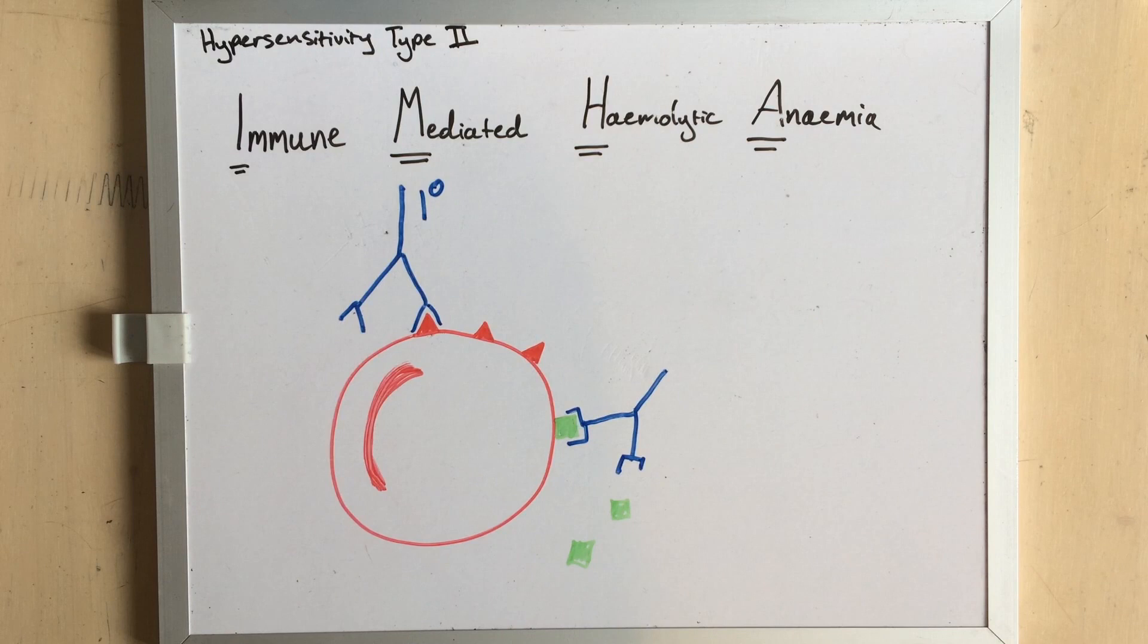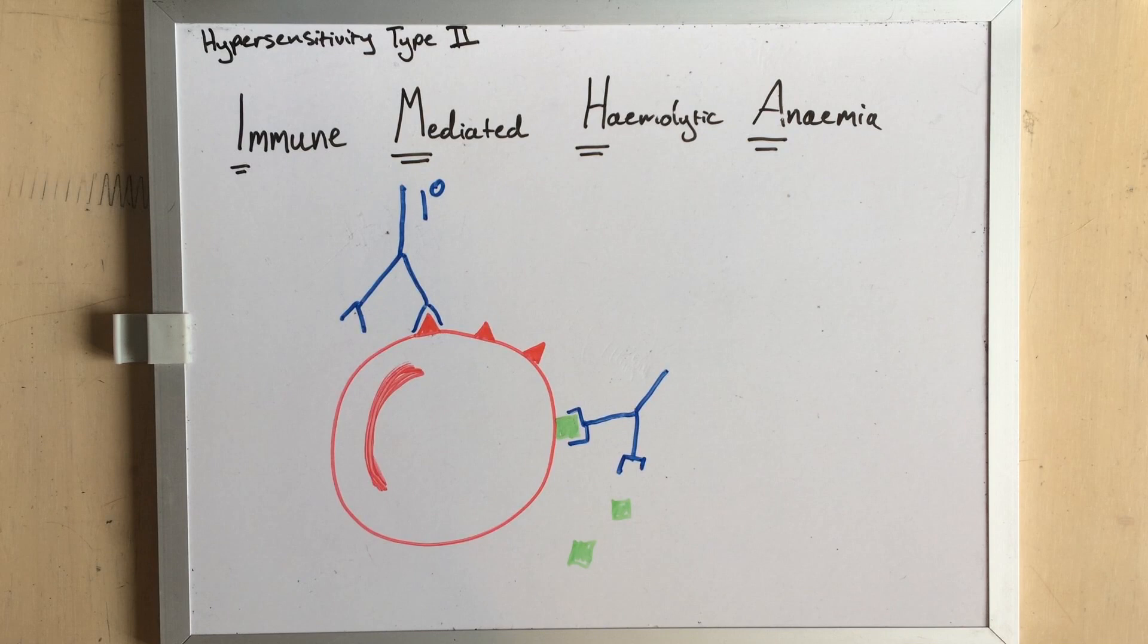Red blood cells are spongy little things that are prone to soaking up all sorts of things to carry them around the body. It's kind of what they do.